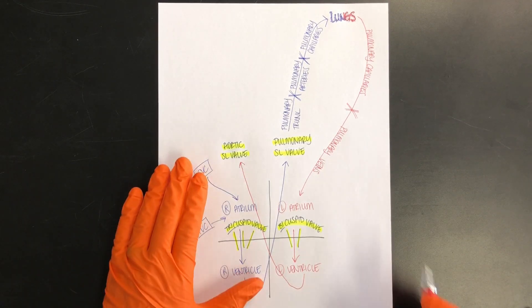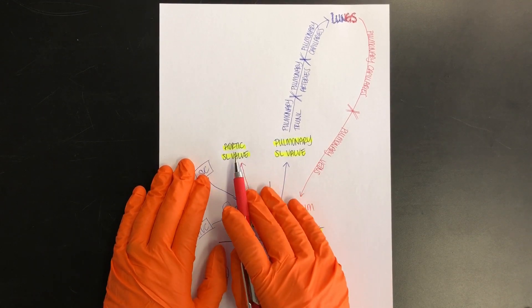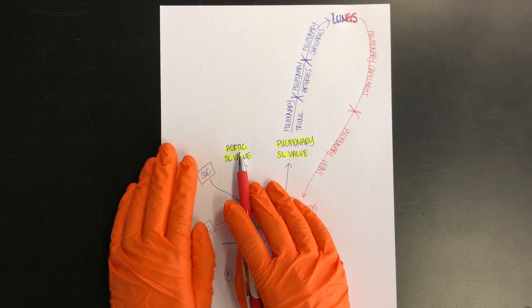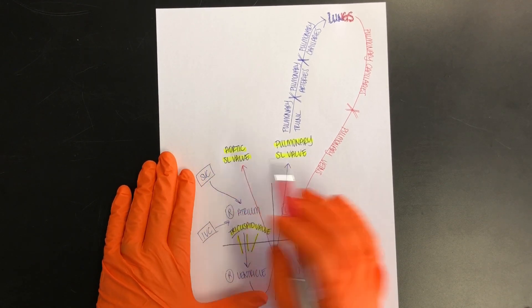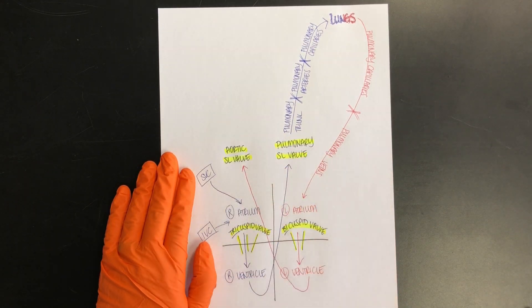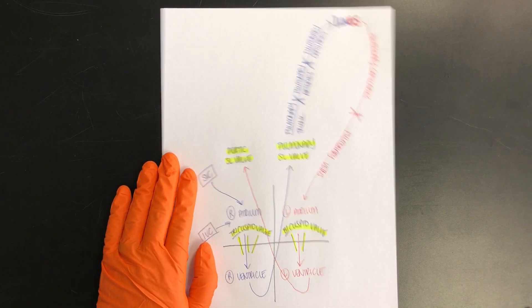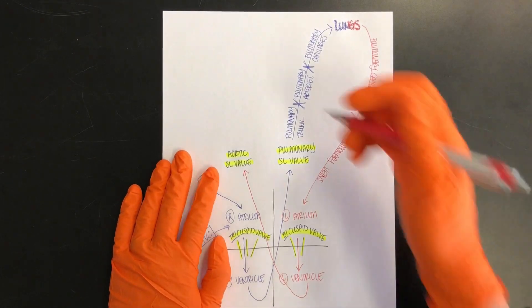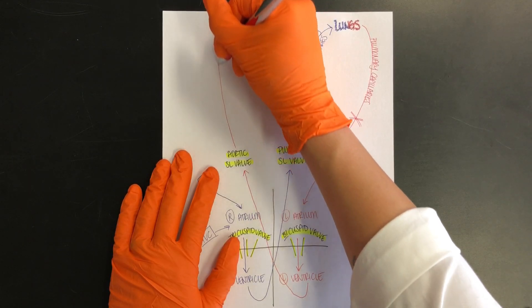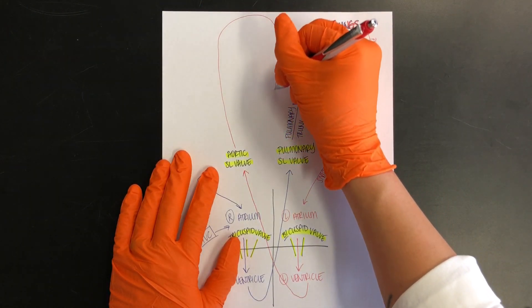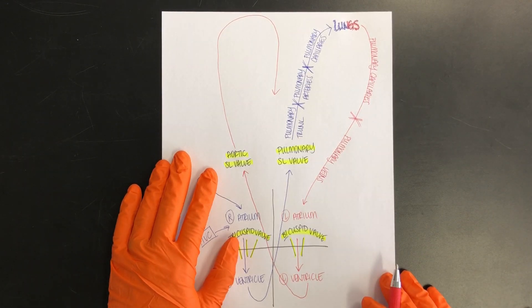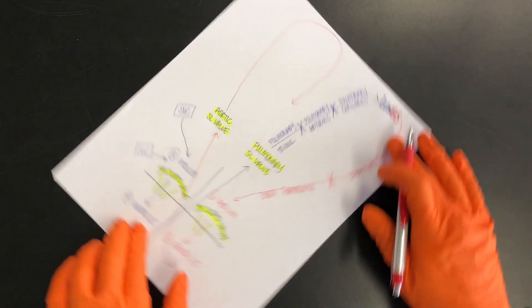Okay, aortic semilunar valve. Aortic because this blood is about to go into the aorta, which is the largest vessel we have in the body. Semilunar because it describes the shape. So the general shape of the aorta looks like this. We're going to come up and around and down like so.